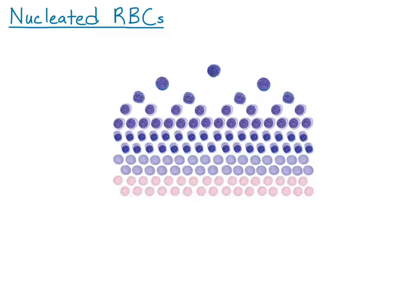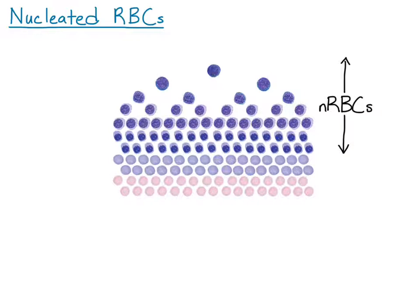This video is going to be on nucleated red blood cells. I have pictured here the maturation sequence of rubroblasts to mature red blood cells, and the nucleated red blood cells are all of the cells that have nuclei: rubroblasts, prorubocyte, rubocyte, and metarubocyte.